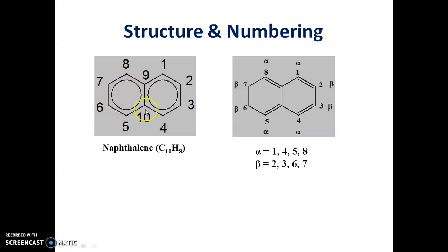We can also number naphthalene in other way, that is it is represented by the alpha and beta positions in Greek terminology. It means naphthalene, there are two different positions.